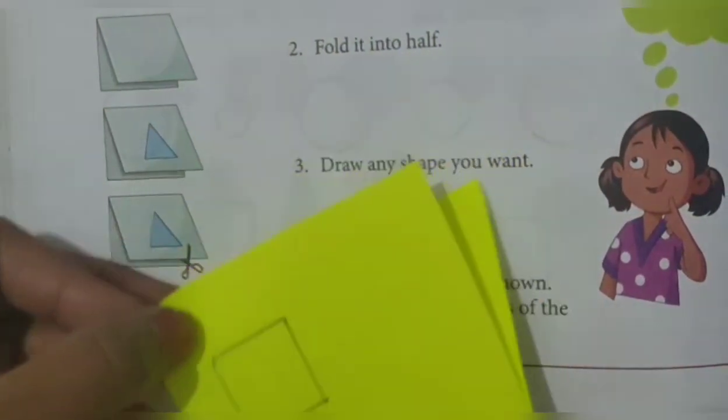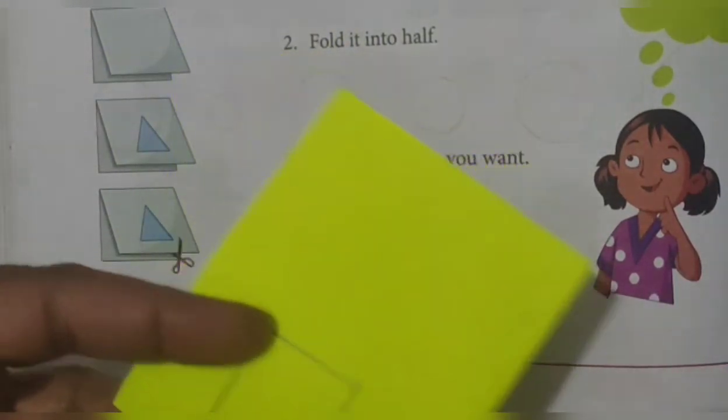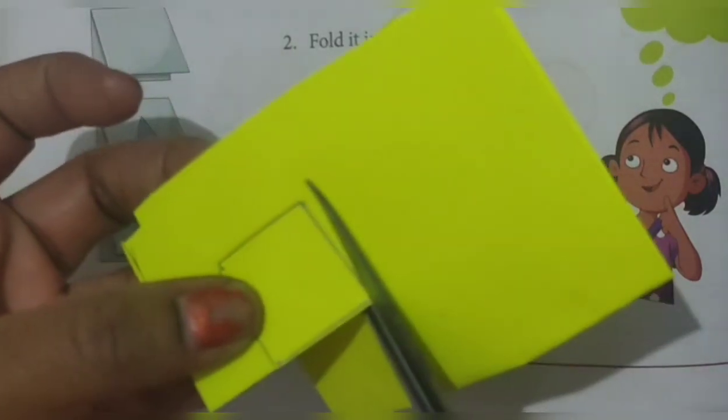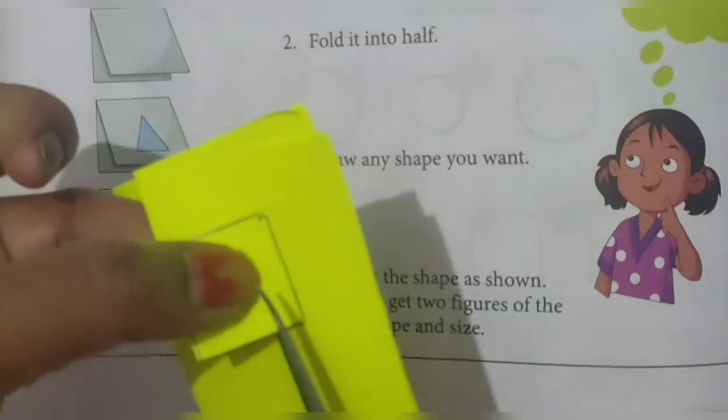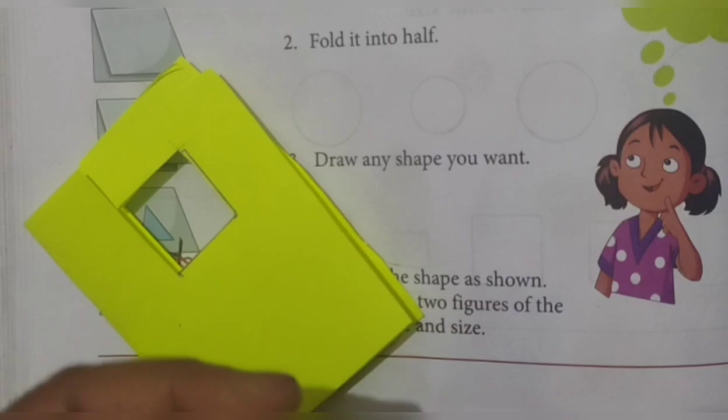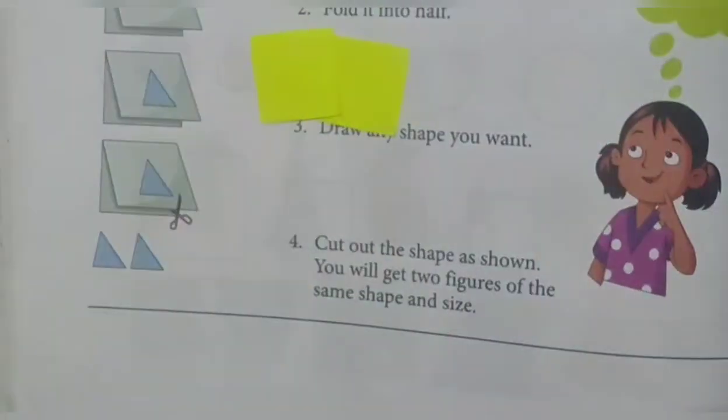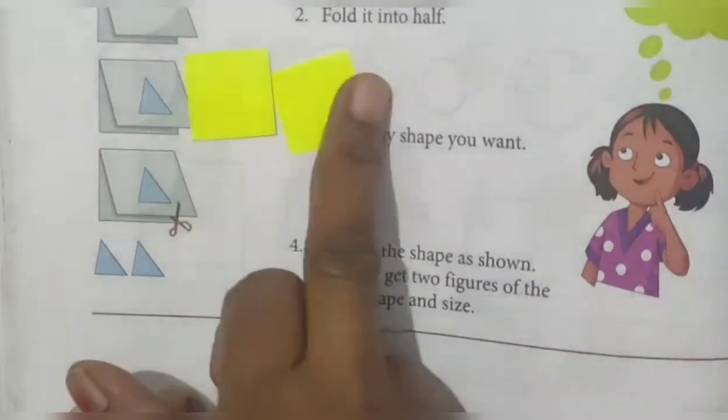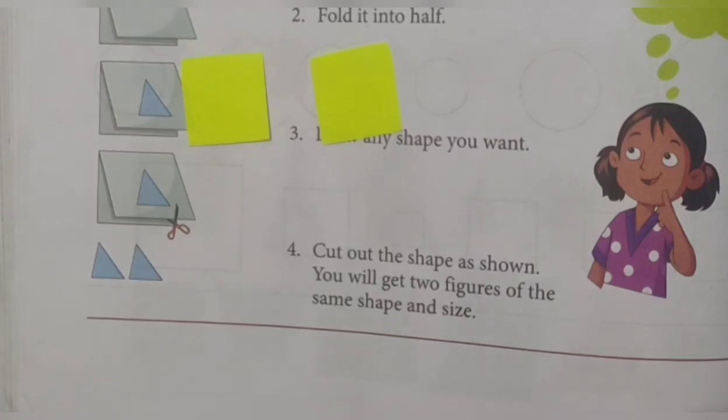Then fourth step is there: cut it. Now see, first, second, third one, and fourth side. Cut this line. Now if you observe, how many squares you will get? One and two, which are having same shapes and same size. This one is the activity for obtaining the figures which are having the same shapes and the same size.